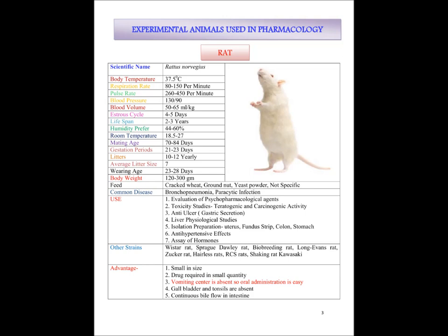The estrus cycle they also show is 4 to 5 days. Lifespan 2 to 3 years. Humidity they prefer is 44 to 60 percent. Room temperature they prefer to live comfortably is 18.5 to 27 degree centigrade. The perfect mating age is 70 to 84 days. Gestation period is 21 to 23 days. They produce 10 to 12 litters yearly and the average litter size is 7. Weaning age is 23 to 28 days. Body weight 120 to 300 grams.